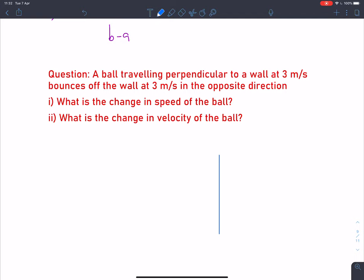I've got a wall and a ball initially moving at 3 metres per second towards the wall. It hits the wall, bounces off, and rebounds with a speed of 3 metres per second.